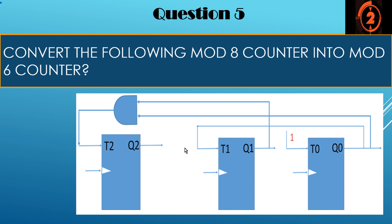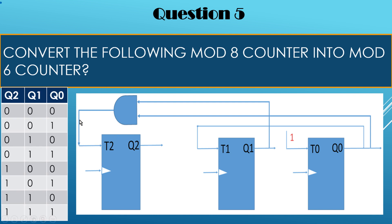The mod-8 counter has 3 flip-flops: Q2, Q1, and Q0, and counts from 0 to 7 across 8 stages. To convert it to a mod-6 counter with 6 stages, it should count from 0 to 5. So we need to eliminate states 6 and 7: when the count reaches 5, it should reset back to 0.